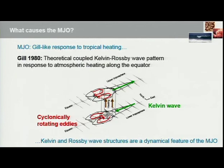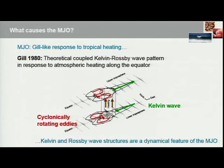The MJO is also a Gill-like response to tropical heating. In 1980, Gill documented theoretical coupled Kelvin waves and Rossby waves as a coupled system in response to atmospheric heating over the tropics along the equator. In the case of the MJO, deep convection produces atmospheric heating, and we see to the east of the convection a Kelvin wave-like structure and to the west a Rossby wave-like structure — very much like the Gill model response to tropical heating. So Kelvin and Rossby wave structures are clearly a dynamical feature of the MJO.